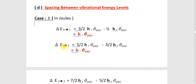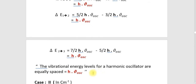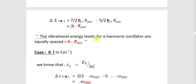The next spacing is delta E from 1 to 2 — that is, absorption from level 1 to 2 — which equals 5/2 h nu_oscillation minus 3/2 h nu_oscillation, and the answer is h nu_oscillation. And delta E from 2 to 3 is 7/2 h nu_oscillation minus 5/2 h nu_oscillation, also giving h nu_oscillation. Therefore, we can conclude that the vibrational energy levels of a harmonic oscillator are equally spaced, and the value is h nu_oscillation.